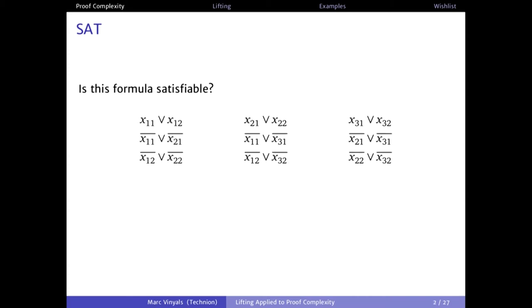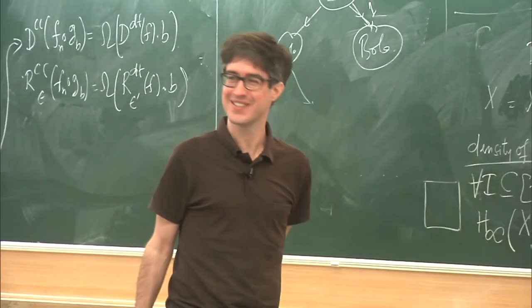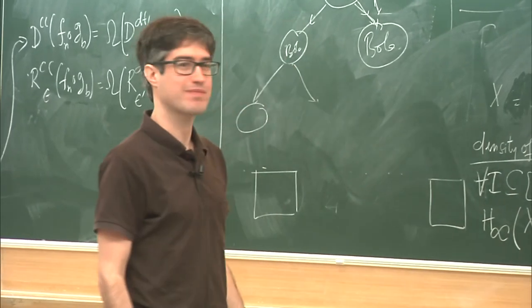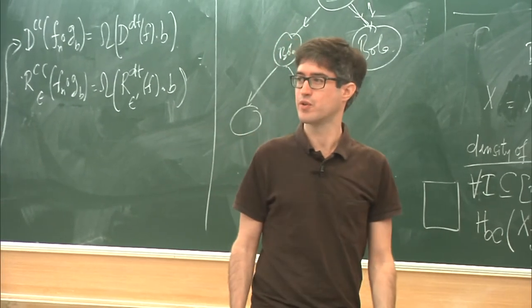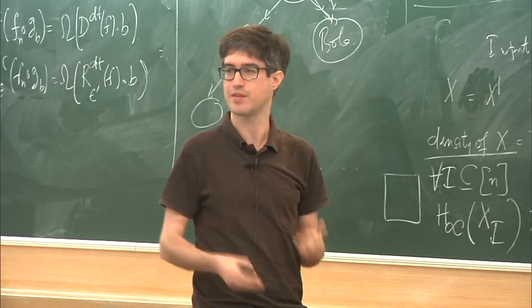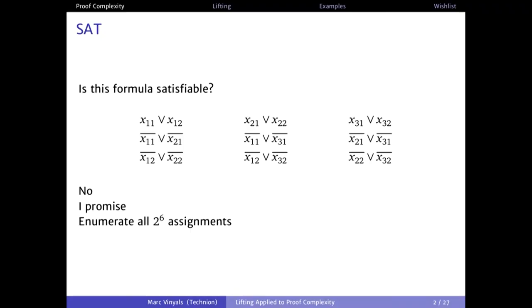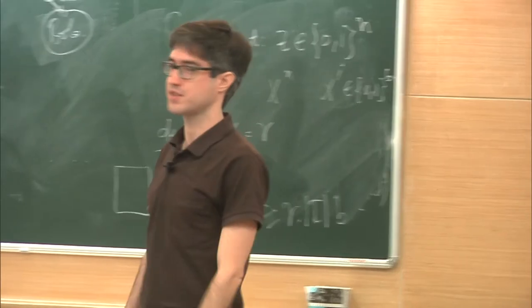Now here's a slightly different formula. Is this formula satisfiable? It's not satisfiable. If you keep asking me, can you prove it? I will say that I promise it's not satisfiable. If you really insist, you could enumerate all two-to-the-six assignments — there are six variables, not so many assignments. Try all of them, and you'll see that none of them satisfies the formula. But of course this is not a great state of affairs; we would like to have shorter proofs.